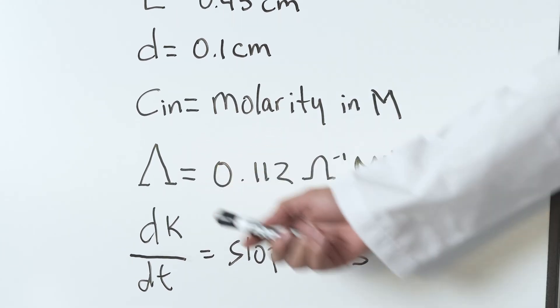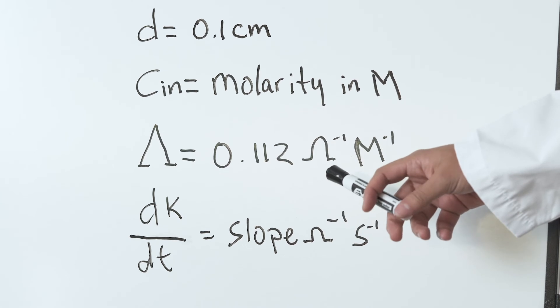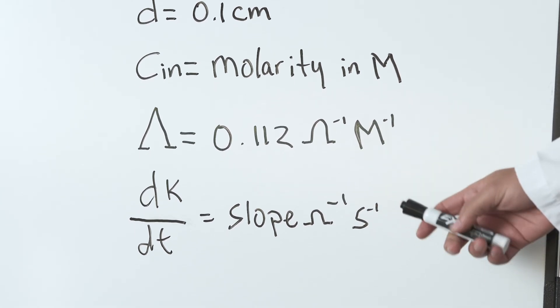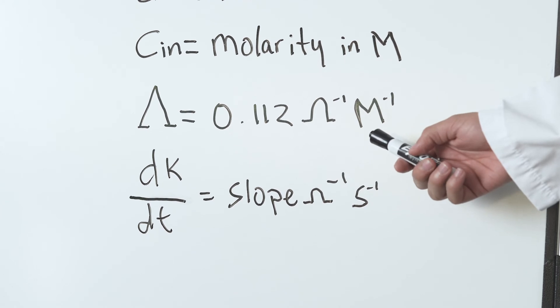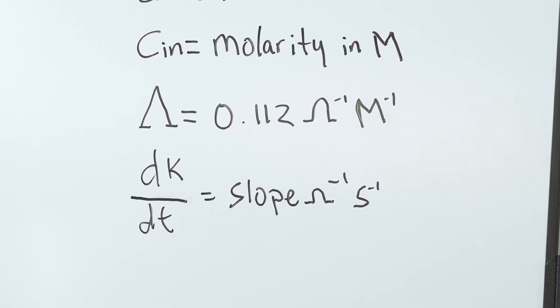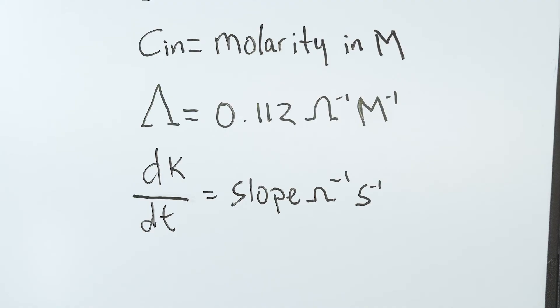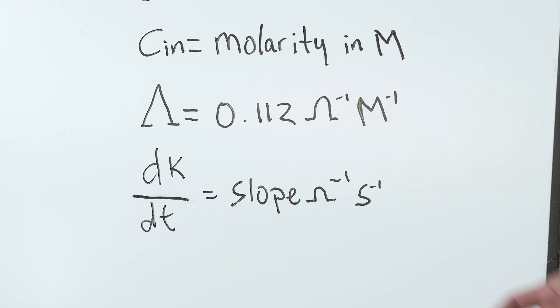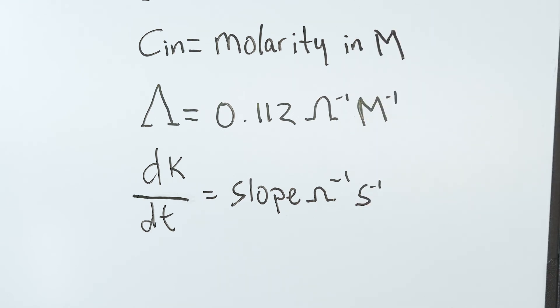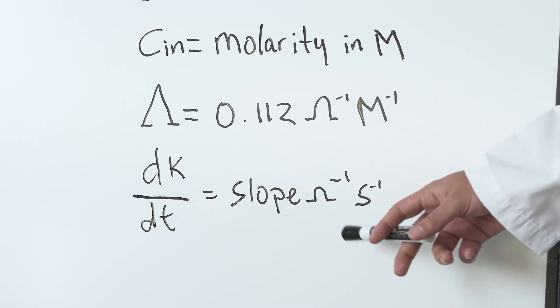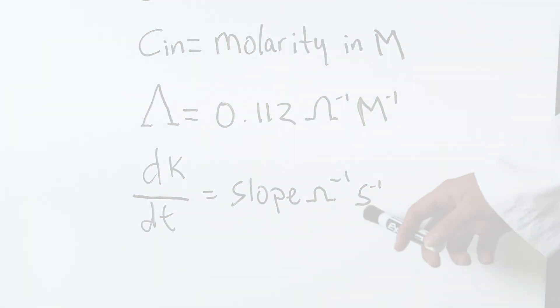Lambda has a value of 0.121 over ohms per molarity and it represents the electrical conductivity change for unit in molarity change. And dK over dt represents the slope of the graph and has units of 1 over ohms per second.